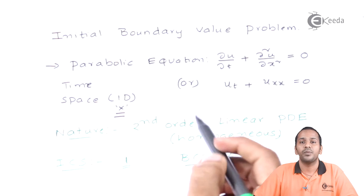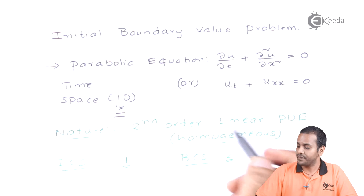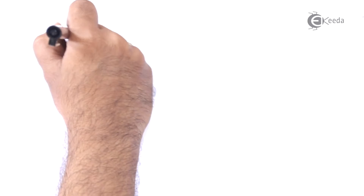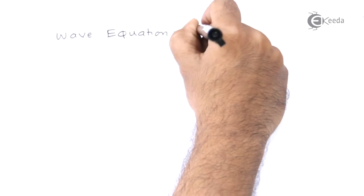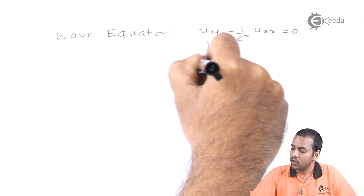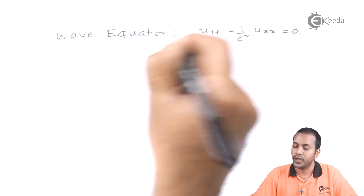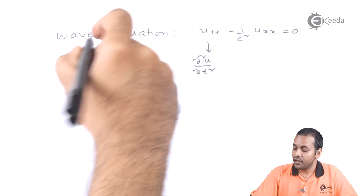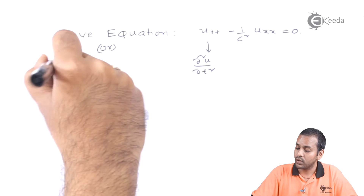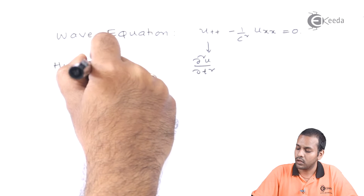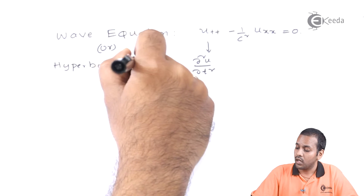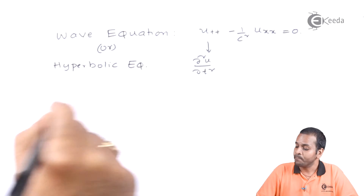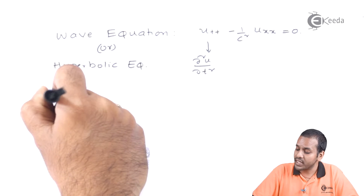Let us see one more example. Consider d²u/dt² — this is called a wave equation or hyperbolic equation. What is the nature of this problem?